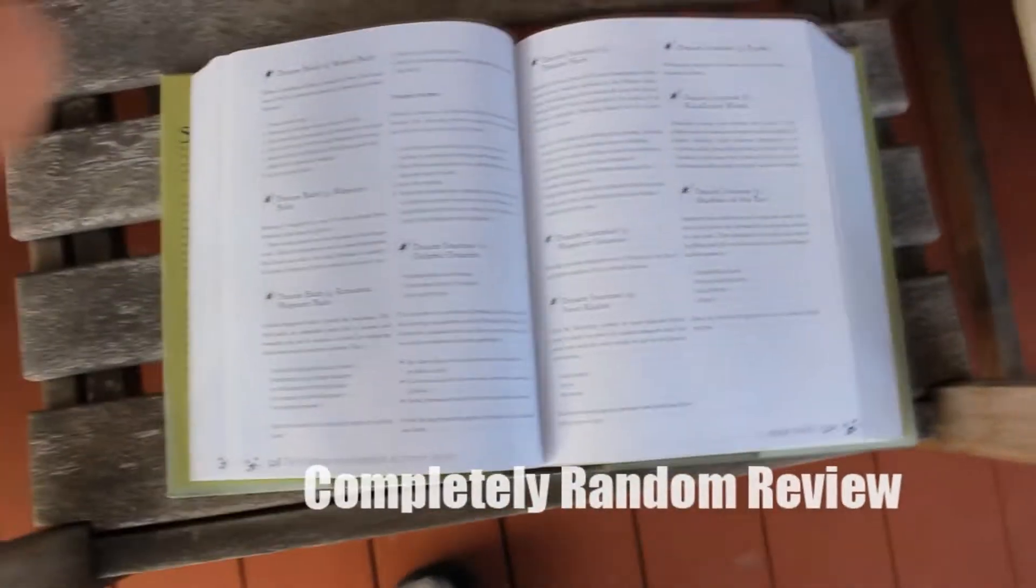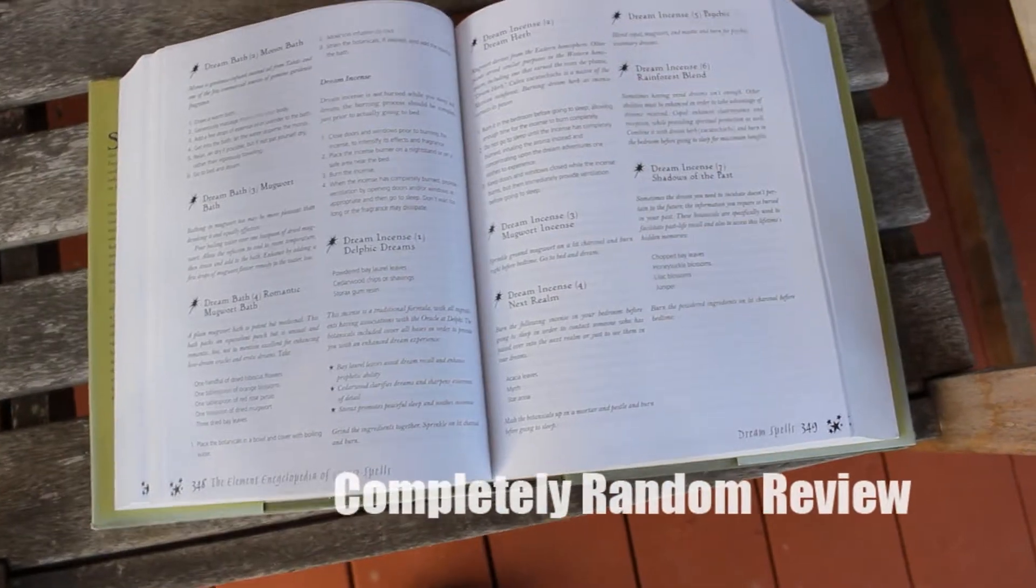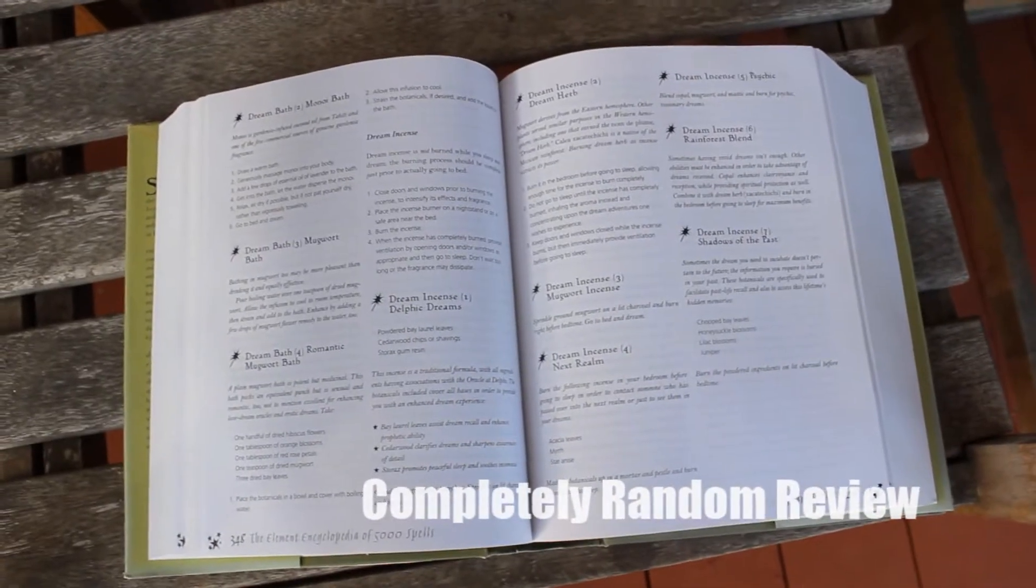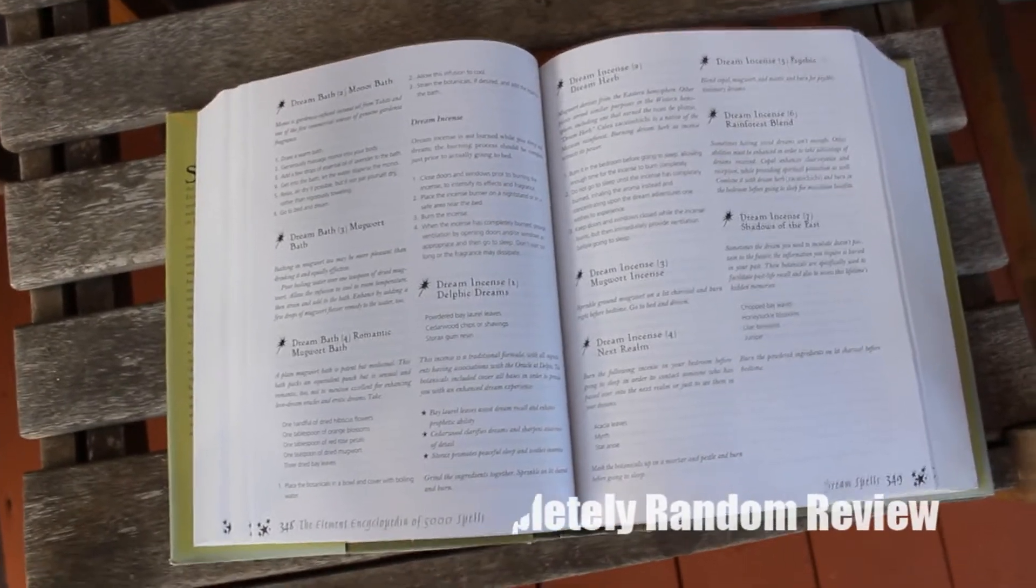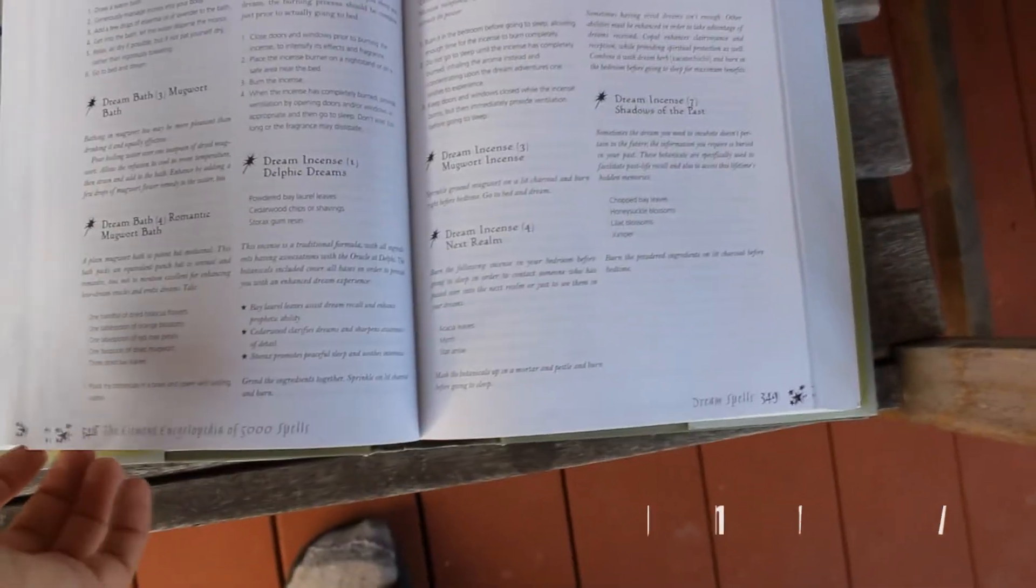But yeah, I read once, like, a spell in this. You've got to do, like, for invisibility, you've got to craft a ring at the time someone's born, under some certain moon. It's just complete nonsense. I'm serious.